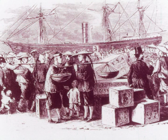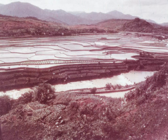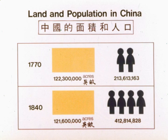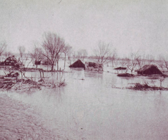Few Chinese went overseas to work or to settle until the second half of the 19th century. There were many reasons why during this period more than two million Chinese left their homeland. China was an agricultural country; most people depended on farming. As China's population grew, land became scarce — the number of people doubled from 1770 to 1840, while the amount of farming land actually dropped. There were also periodic floods and droughts, which caused famines and uprooted millions of people.